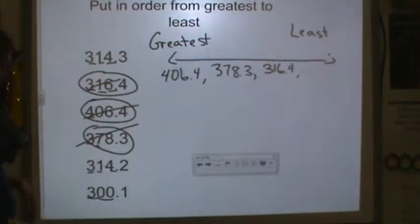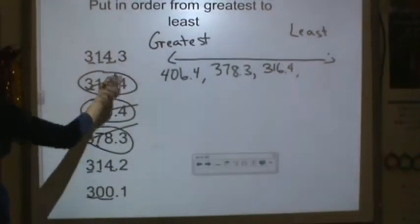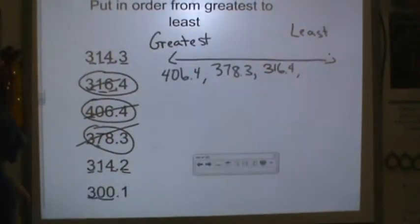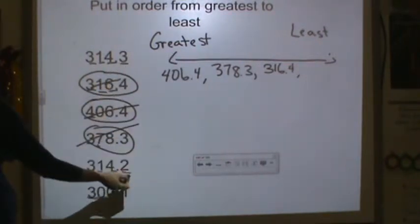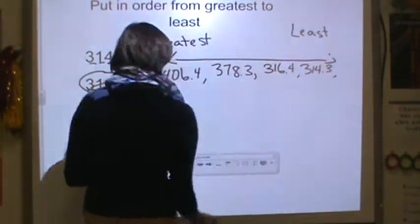Next, I'm going to go to my next place value. I see 4 and 4 the same, so I've got to go to the tenths place. Here, 3 tenths is more than 2 tenths, so I have 314 and 3 tenths.